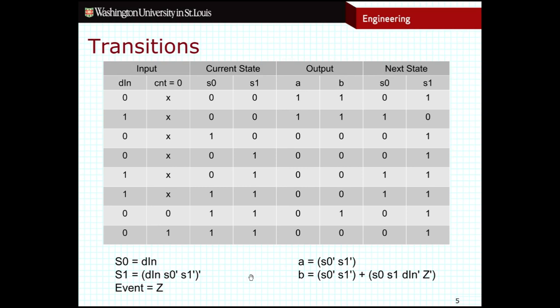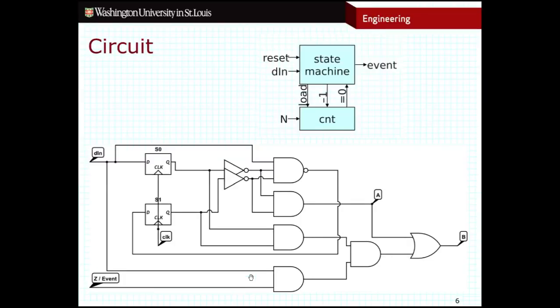And now we can construct our circuit, just as we've been constructing circuits based on these equations all semester long. Here, then, is what that circuit would look like. We see our inputs over here on the left. We see our outputs over here to the data path on the right. And then the actual output itself, event, is over here as well. So that is the implementation of this top part of this circuit diagram, this top part here, the state machine itself.